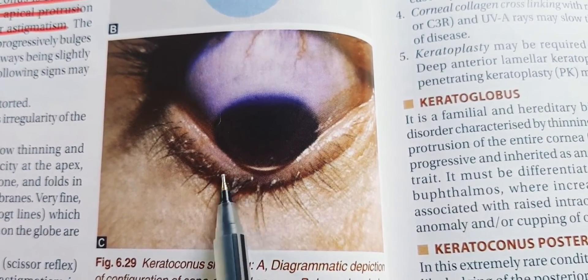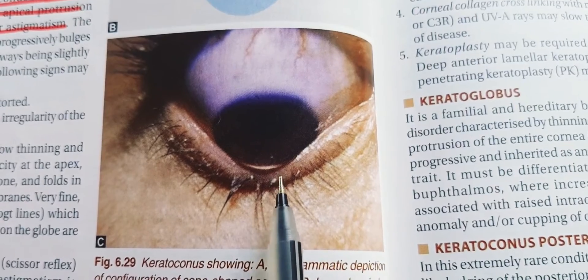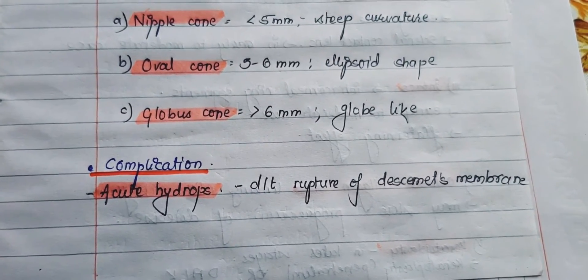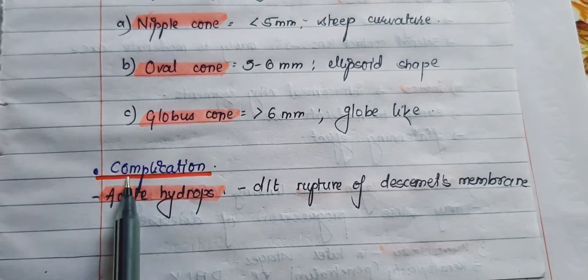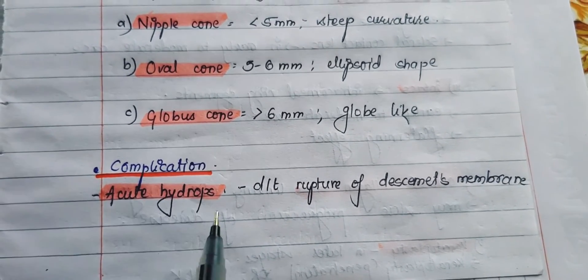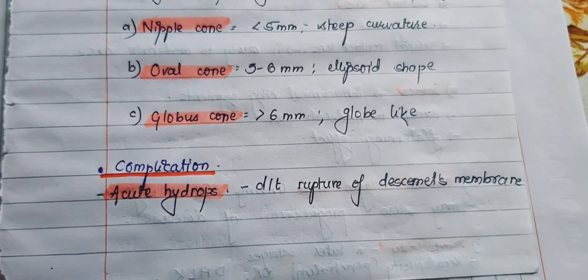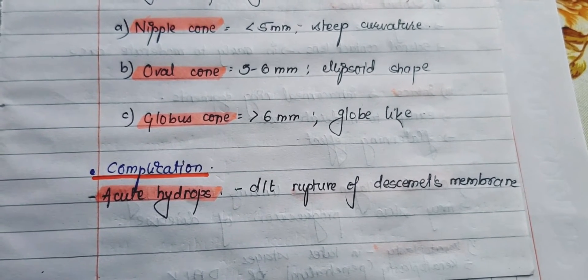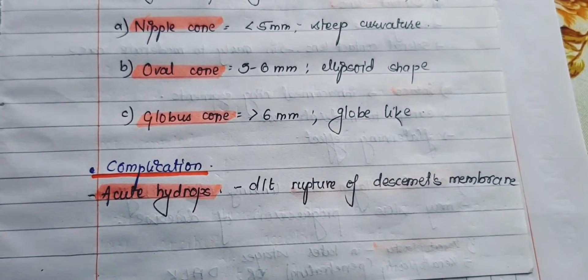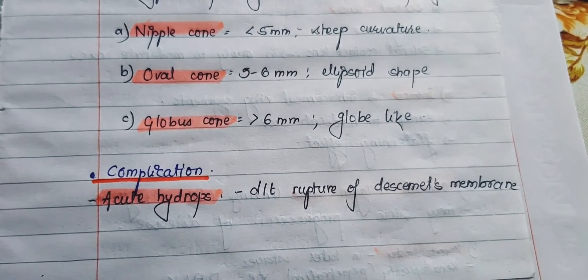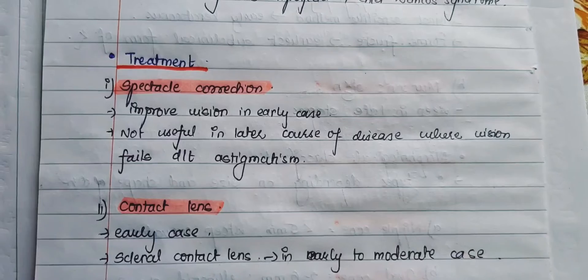The most important complication of keratoconus is acute hydrops. This occurs due to rupture of Descemet's membrane and is characterized by sudden development of corneal edema associated with marked defective vision, lacrimation, photophobia, and pain.